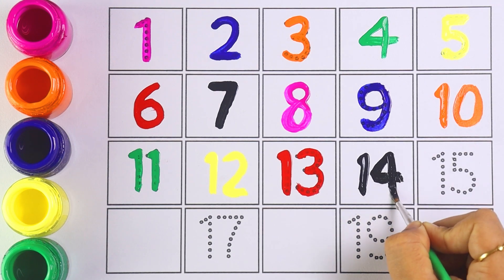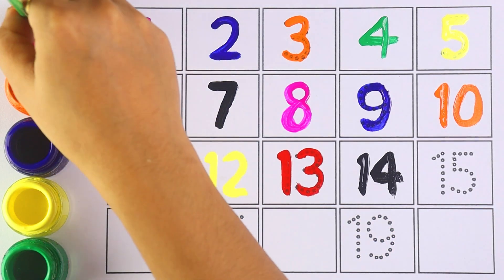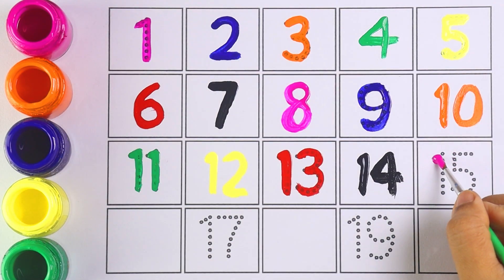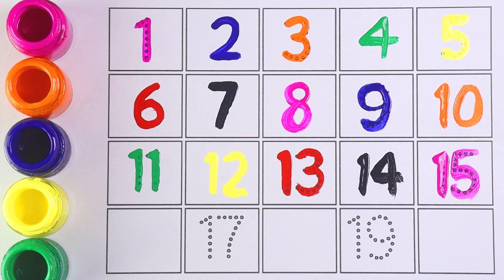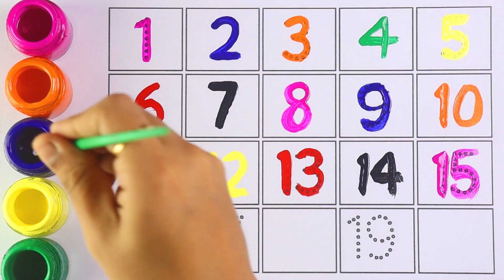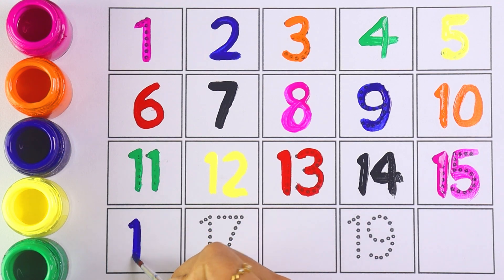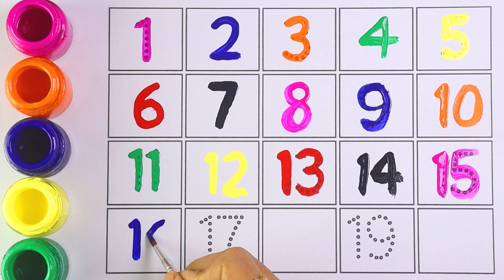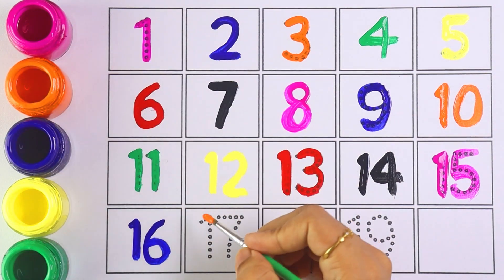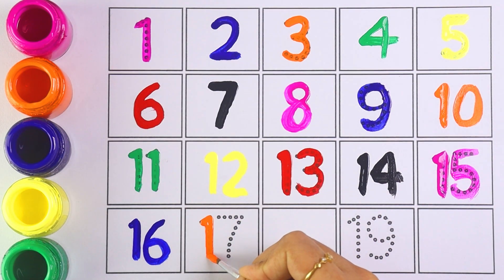Number fourteen. Which number is this kids? Number fourteen. Number fifteen. One and five makes the number fifteen. Number sixteen. One and six makes the number sixteen. Let's move on to the next number.